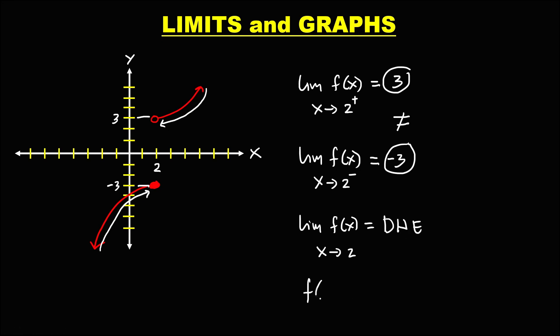To find the value of f(+2), look at the graph and find the shaded circle. Since this is the shaded circle, therefore f(+2) is equal to negative 3.